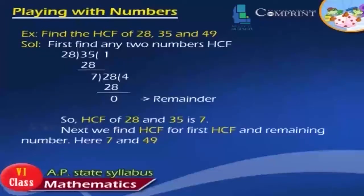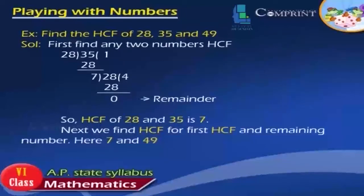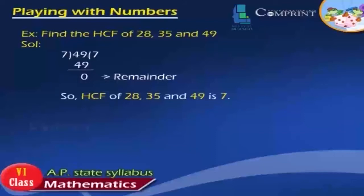Example: Find the HCF of 28, 35, and 49. First find HCF of 28 and 35, then find HCF of that result with 49. Here, dividing 49 by 7 until the remainder is 0, we find HCF of 28, 35, and 49 is 7.